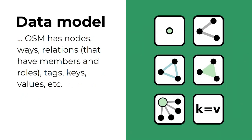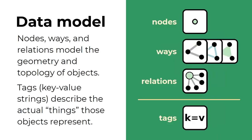In the same way that Wikidata has item statements, properties, et cetera, OpenStreetMap has things like nodes, ways, and relations that have members and roles. And these have tags that are composed of keys and values. Nodes, ways, and relations model the geometry and topology of objects.